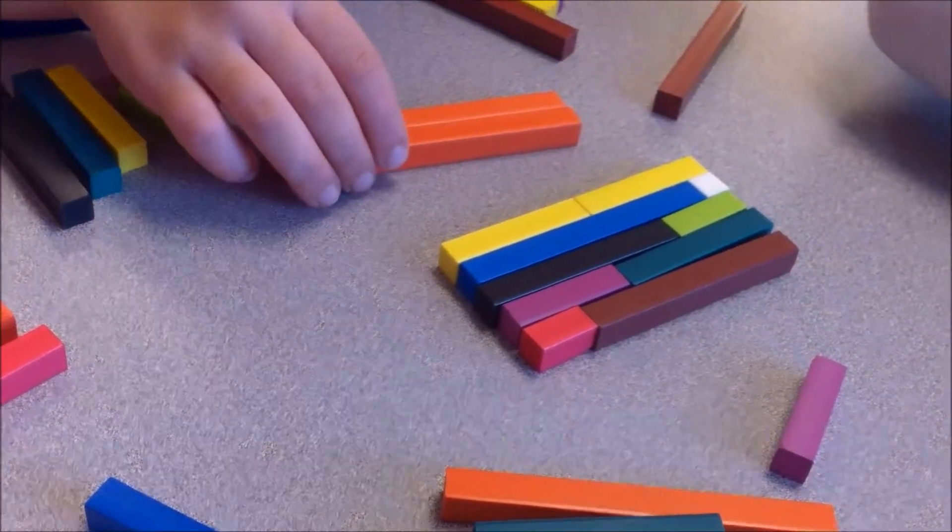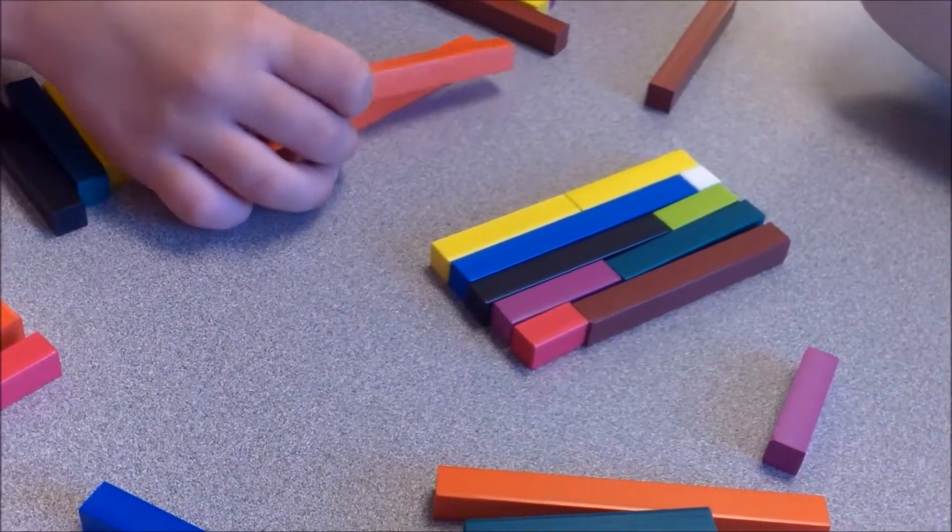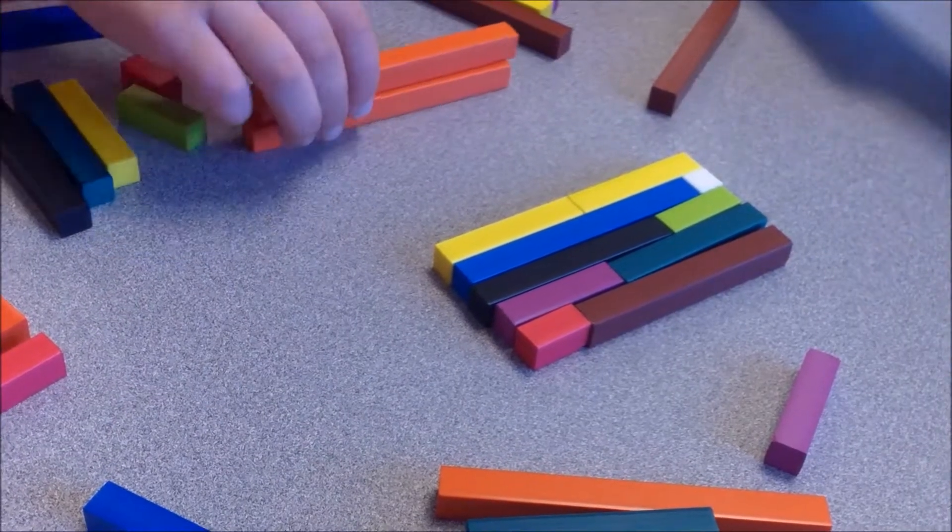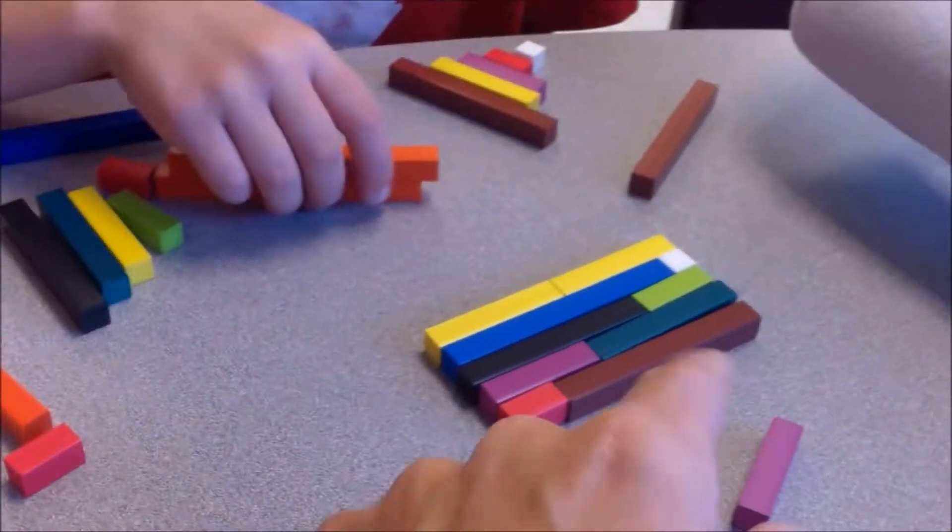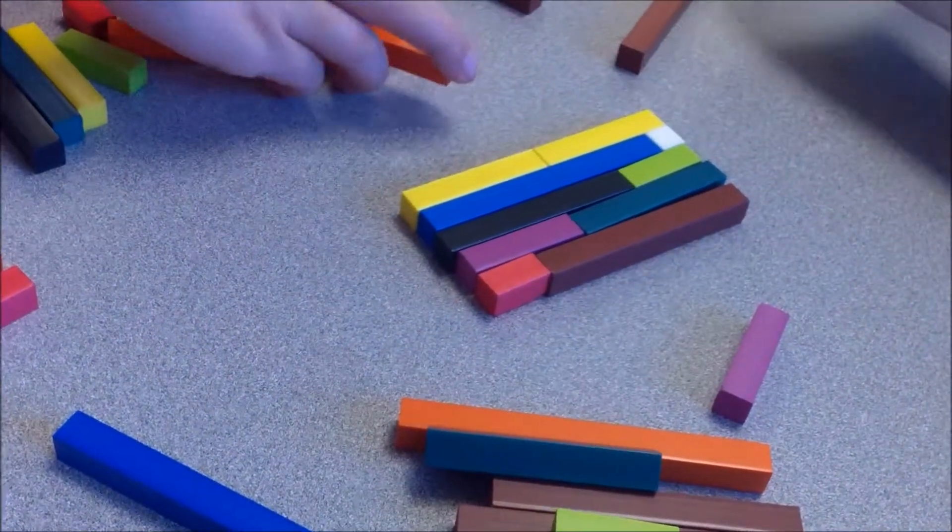Nine and one make ten. Three and seven make ten. Four and six make ten. Eight and two make ten. You know, when I was little, that was my favourite one. Eight and two. Yeah, because I like red too.